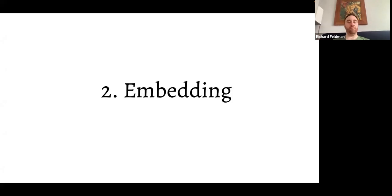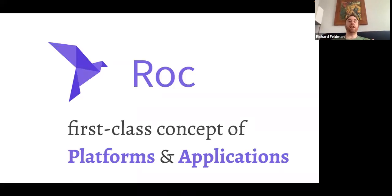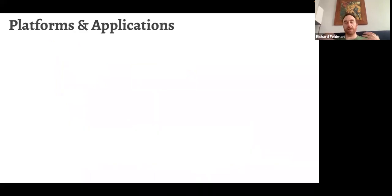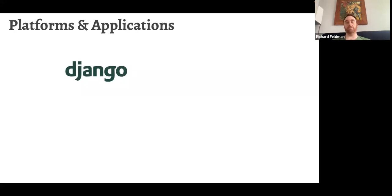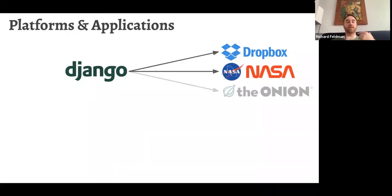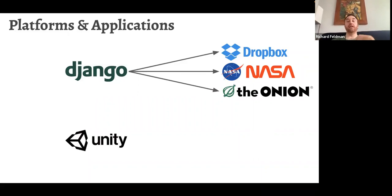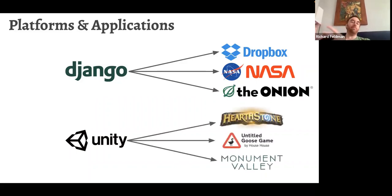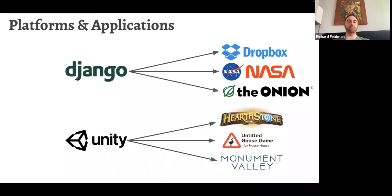I want to talk about embedding before we get to performance. In Roc we have a first-class concept of platforms and applications. In the general sense, a platform is something like Django — a Python framework for building web applications — and on top of that platform there are multiple individual applications like Dropbox, NASA, and The Onion. Another example is the Unity game engine, where individual games like Hearthstone, Untitled Goose Game, and Monument Valley are all applications built on top of the Unity platform.